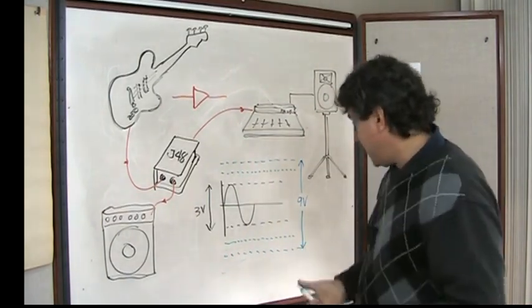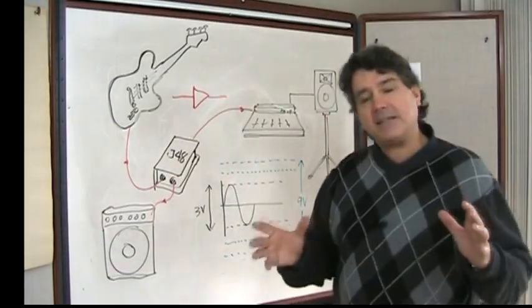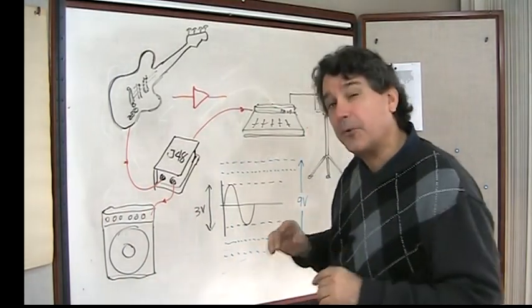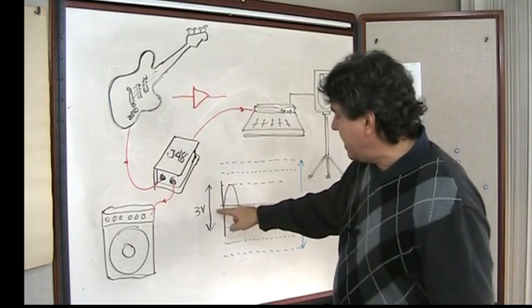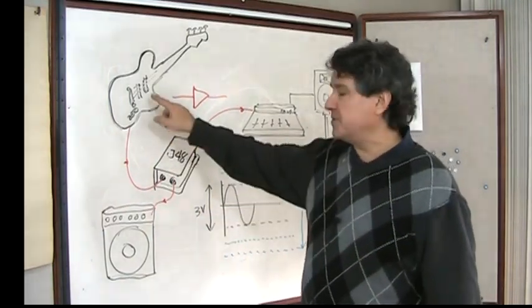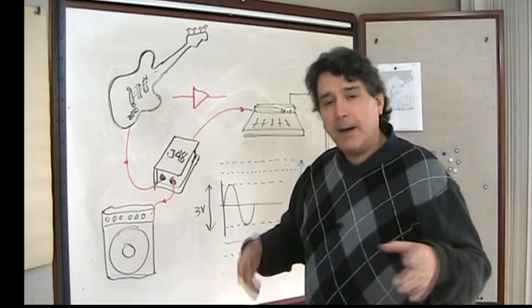Now, where things get interesting is active DI boxes have what they call a limited range in which they work, and that's called the rail voltage. A typical DI has a range of about three volts. Now, back in the day, when the world was using old Fender guitars, it was fine because they just had a passive pickup.